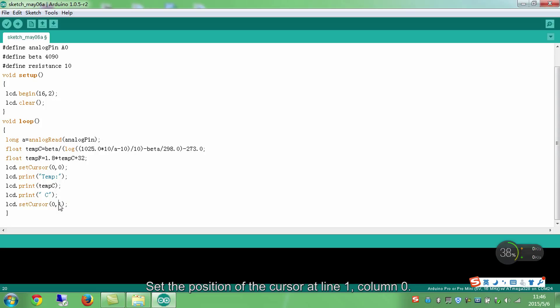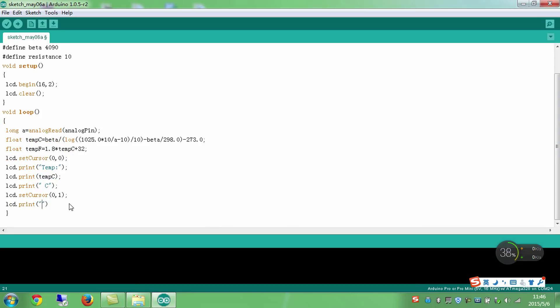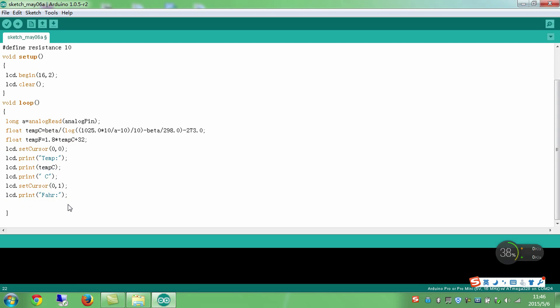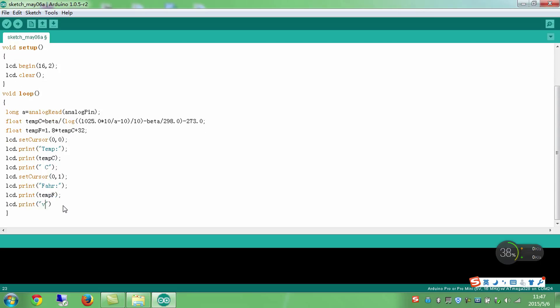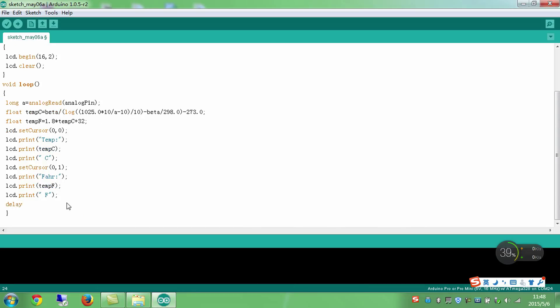Set the position of the cursor at line 1, column 0. The temperature in Fahrenheit is to be displayed here. Similarly, here print the character FAHR on the LCD, which means Fahrenheit. Then the value of the Fahrenheit temperature. Then print the unit Fahrenheit on the LCD. Wait for 200 milliseconds. OK the code part is thus finished. Now connect the SunFounder Uniboard with the computer and upload the sketch onto the board.